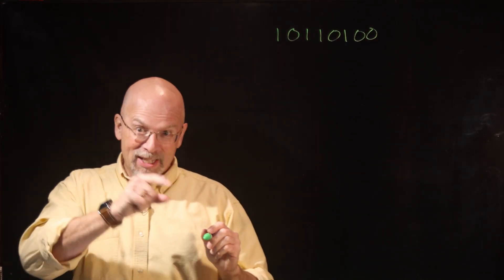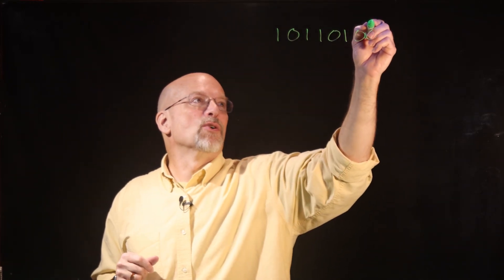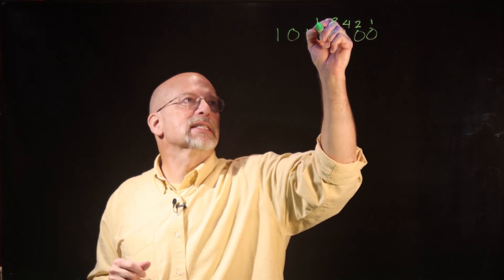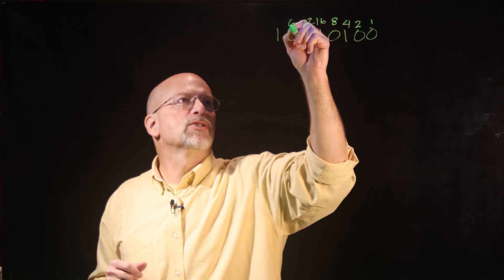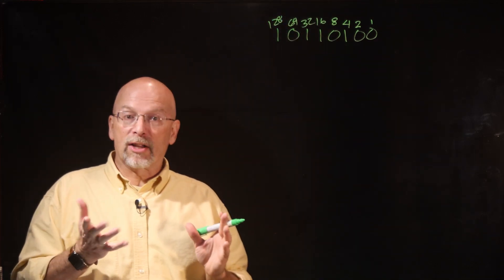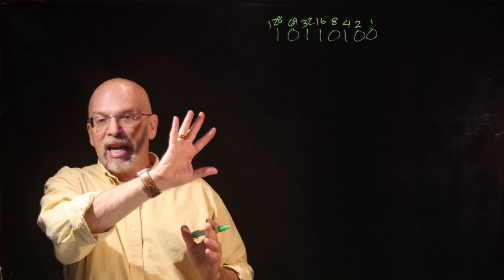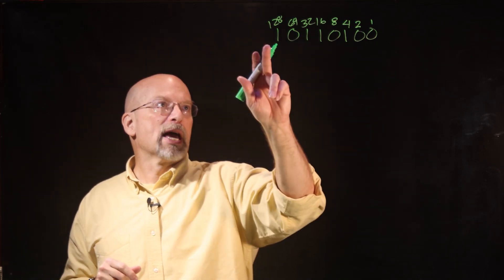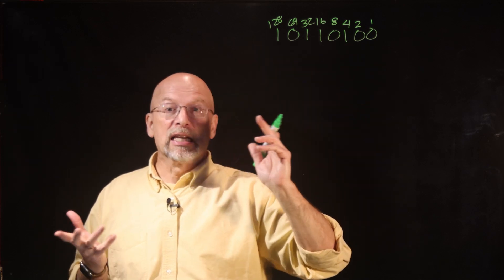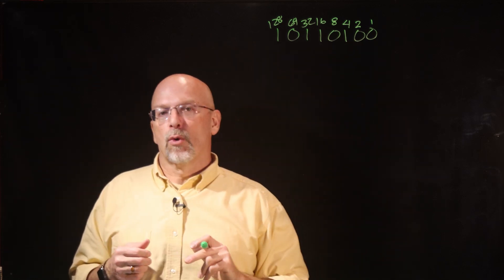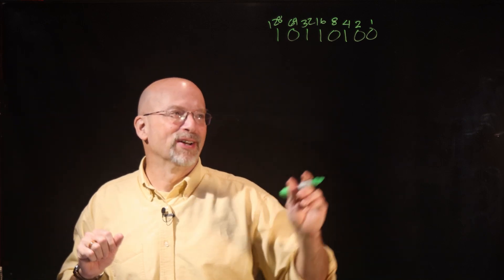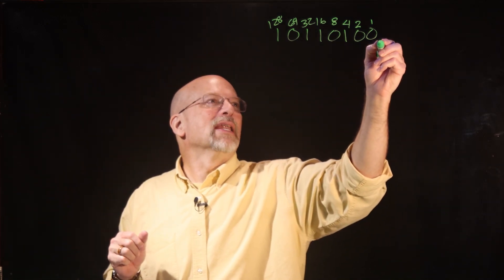This is an unsigned binary number. The place values are: ones, twos, fours, eights, sixteens, thirty-twos, sixty-fours, one-twenty-eights. To calculate what integer in decimal this represents, we add one-twenty-eight plus thirty-two plus sixteen plus four plus eight.